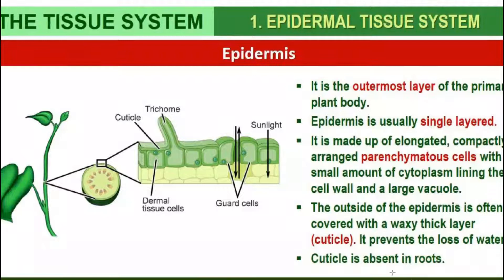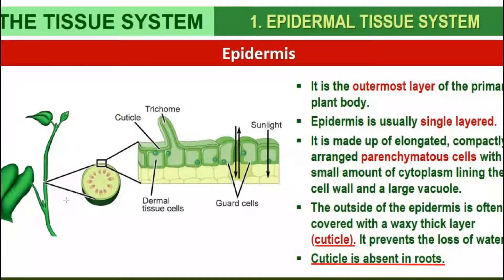That waxy thick layer is called the cuticle. An important thing to remember is that the cuticle is absent in roots. When we see the section of the root, the cuticle is absent.